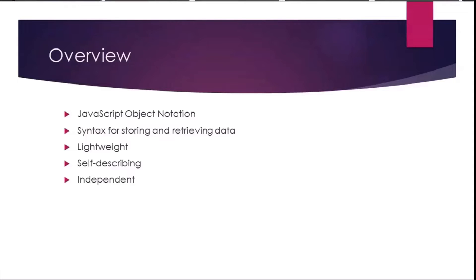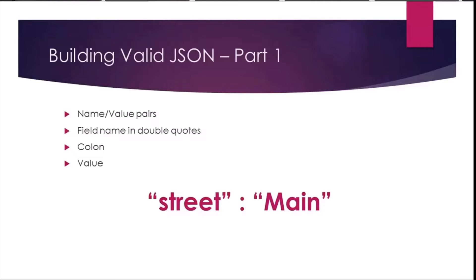You could have an application written in something totally different from Java, and then have data pulled into it in a JSON format just fine. We're going to go through about four or five steps here to build this. Based on name-value pairs, the field name is going to be in double quotes. Notice I have a field name here of "street," and it's in double quotes. Then there is a colon, and then the value — so street, main. Simple.